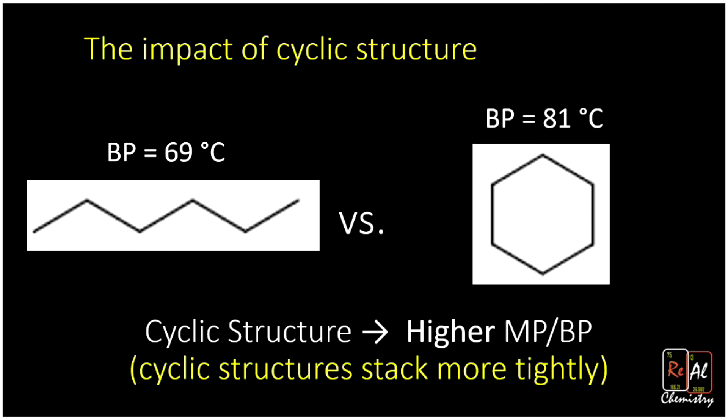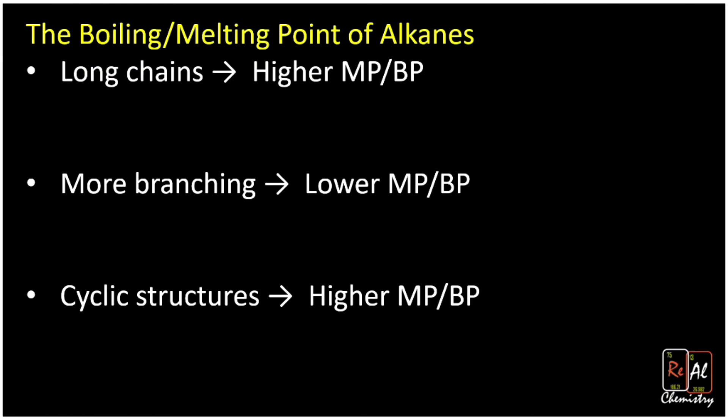To summarize, here are the three factors that influence the boiling point and melting point of alkanes: long chains give you higher melting points and boiling points; more branching gives you lower melting points and boiling points; and cyclic structures lead to higher melting points and boiling points, assuming all other factors are the same. These are all rules of thumb — unusual cases do occasionally come up with real molecules, but these are helpful guidelines.